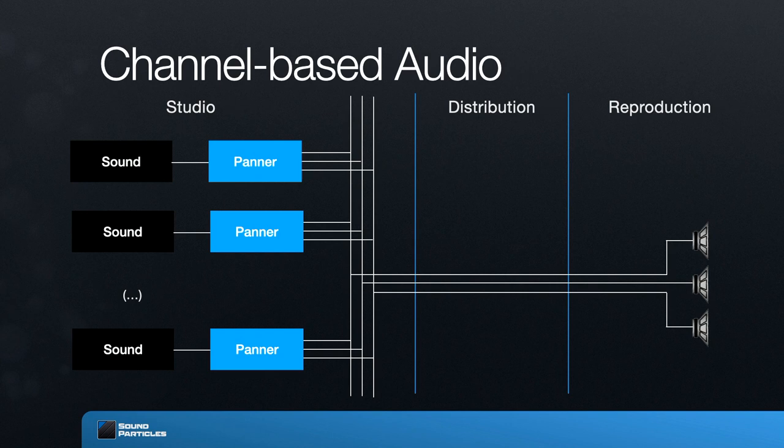The panner, depending on where you want the sound to be positioned, will create the right amount of signal to send to each one of those channels. So if you have a sound and you want it to be in the center but slightly to the left, it's going to send for instance 90% of the signal to the center, 15% to the left, and zero to all other channels. Then you mix all of those sounds together and get a global left signal, center, right — and distribute these channels completely independent. During reproduction you take each one of those signals and have a loudspeaker reproducing them.